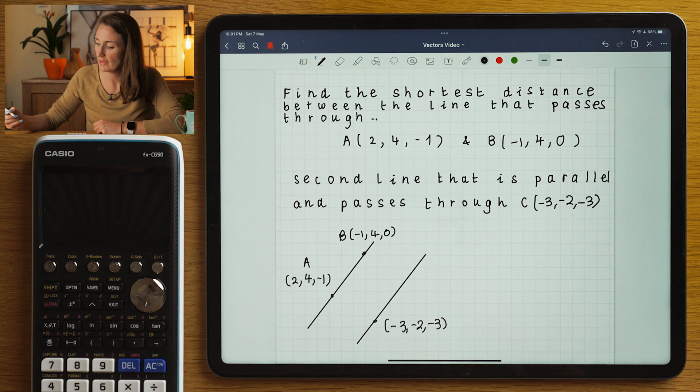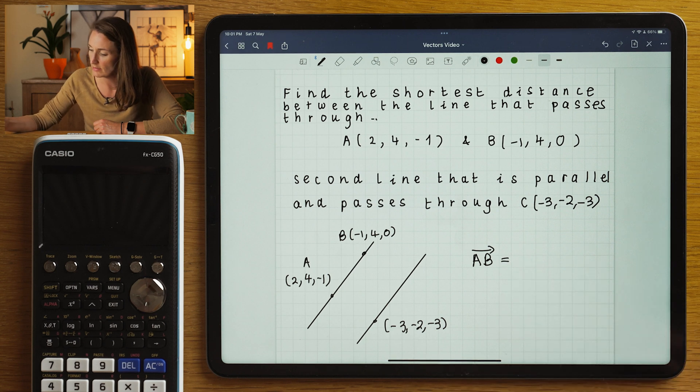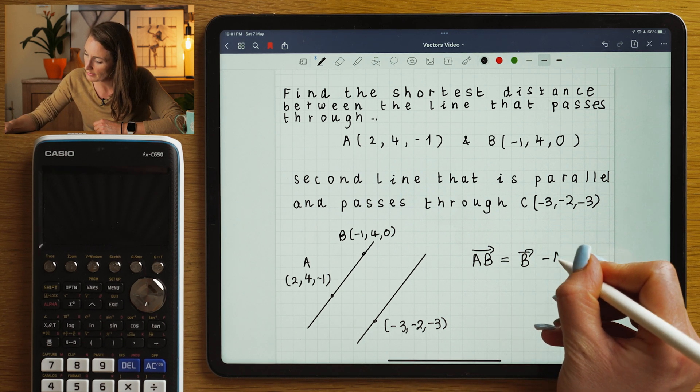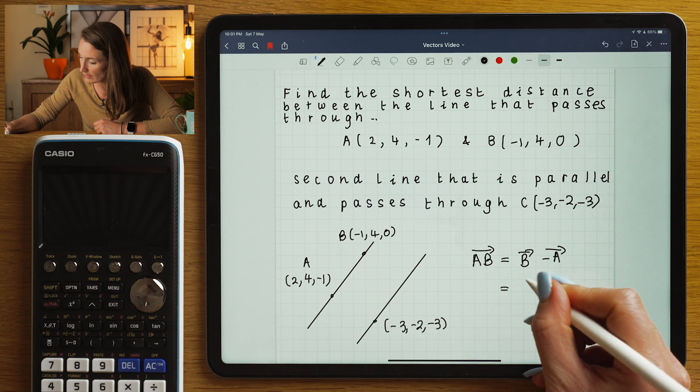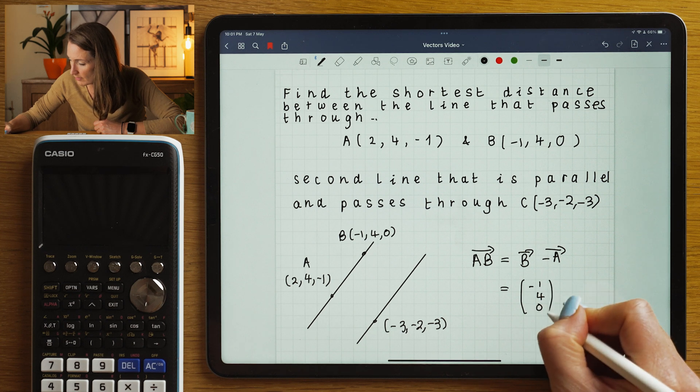This diagram is a little bit of a simplification, but it just helps us to get started. So the vector joins A to B is going to be the vector B minus A. The vector B is (-1,4,0).